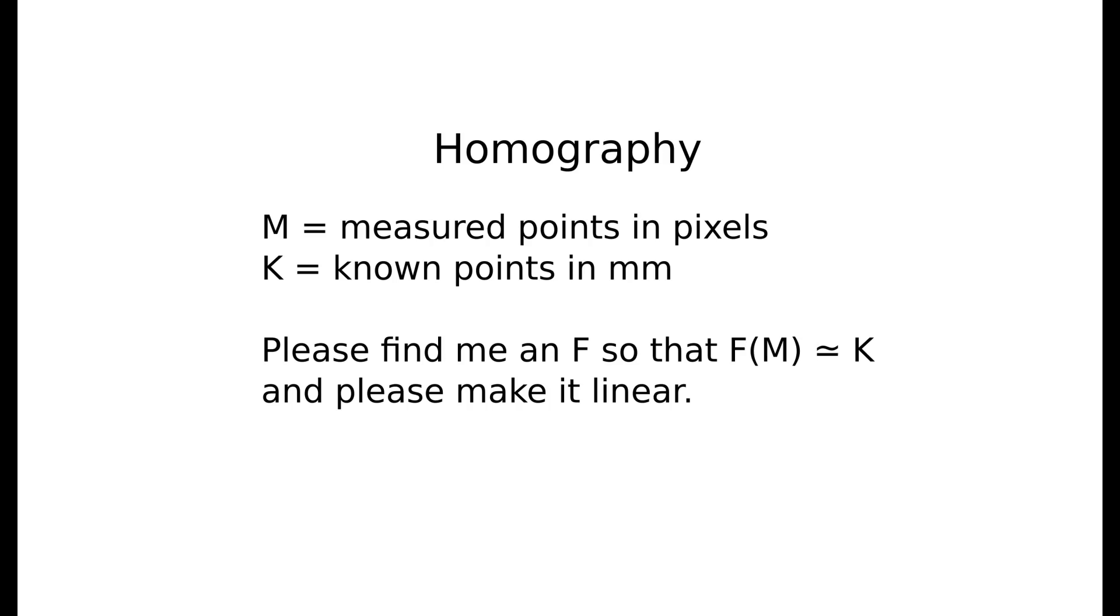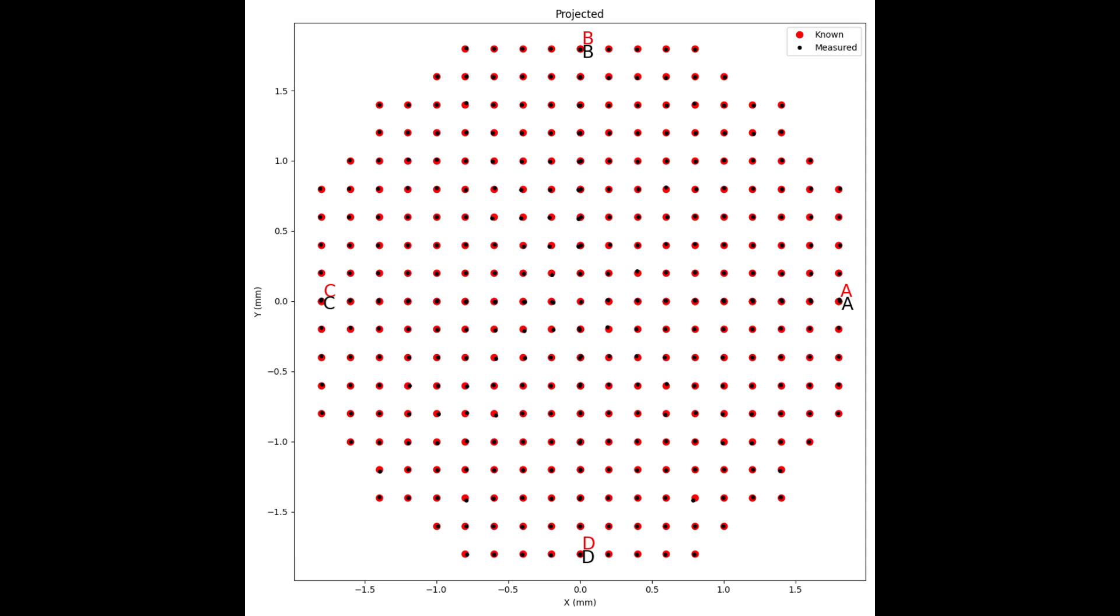To fit this data, we find what is called a homography between the corresponding points, so that when we take a new pixel reading, we can translate it to its real world coordinate. This homography is just a transformation matrix that most accurately matches our measured and known data. And you can see that after transforming our measured data with this matrix, we get a very nice fit.